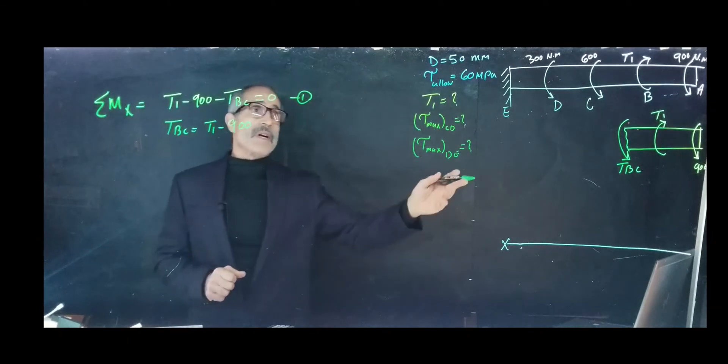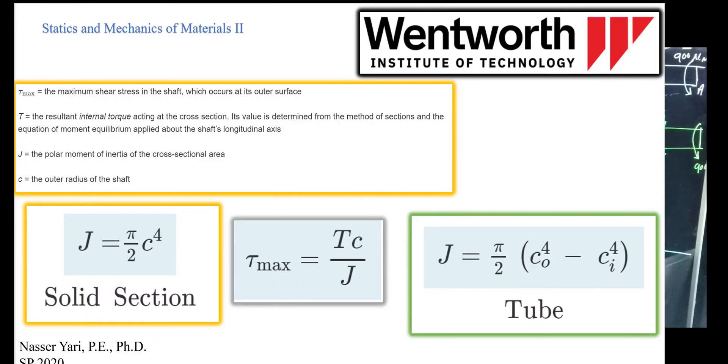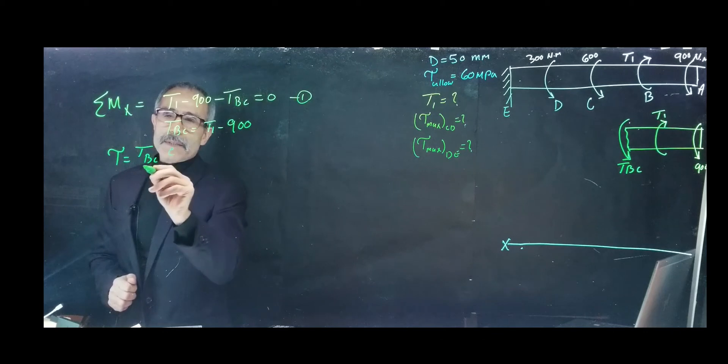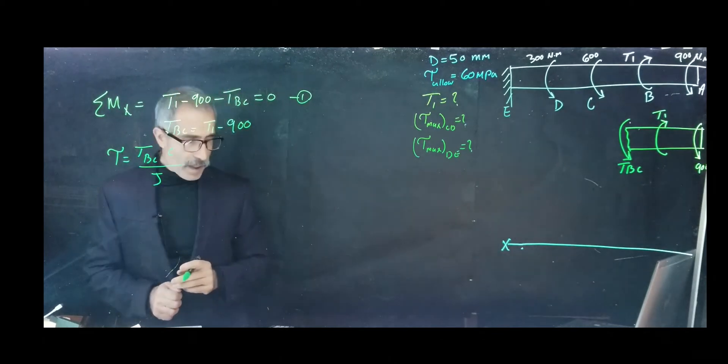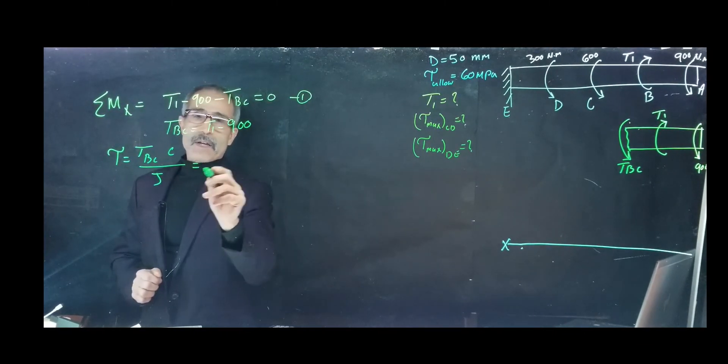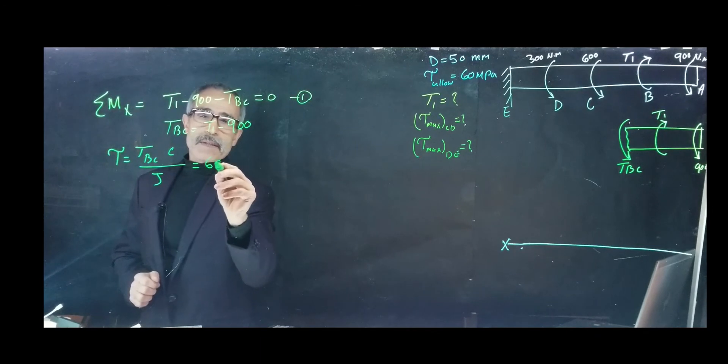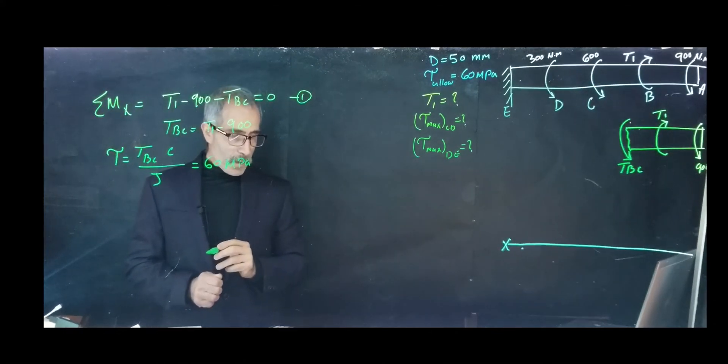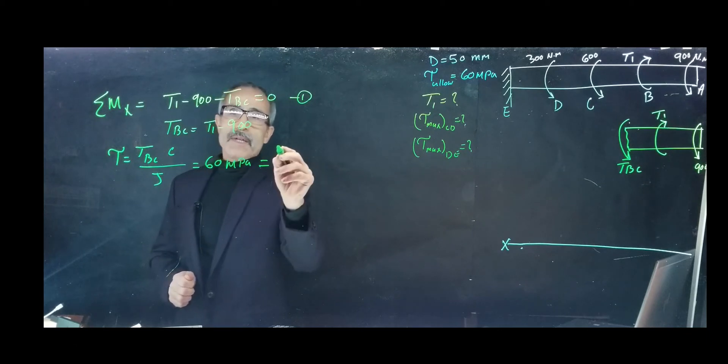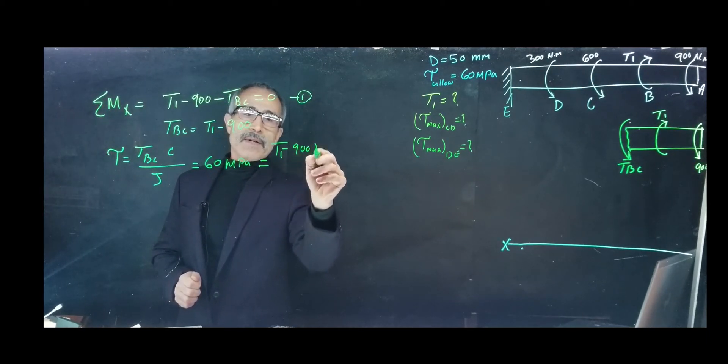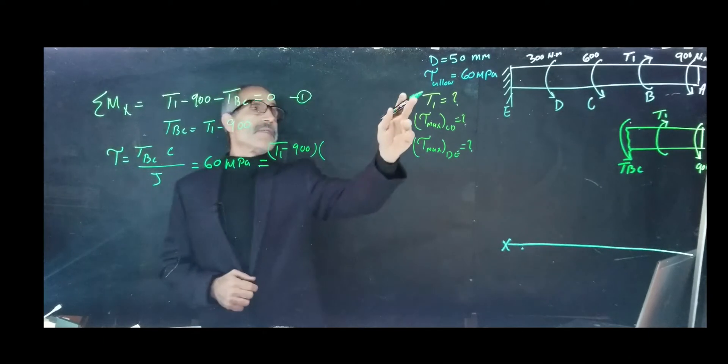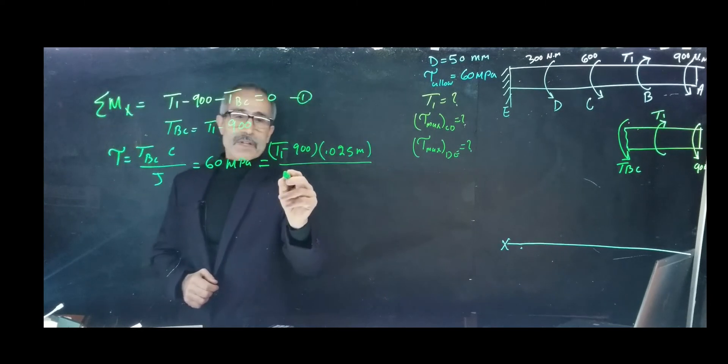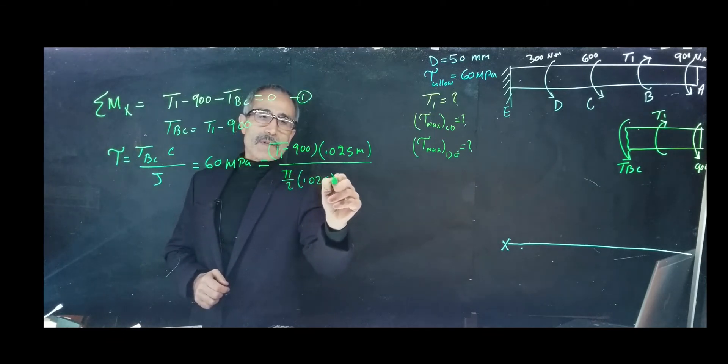The equation for allowable shear stress is TBC times C divided by J. We have 60 megapascal equals TBC, which is T1 minus 900, times C. C is half the diameter, 0.025 meters, divided by J. The equation for J is pi divided by 2 times 0.025 to the power of 4.